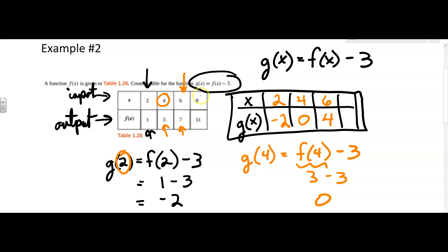And then the last one, our input is 8. We're going to take the output that we get from an input of 8 for the f of 8, 11, and we're going to subtract 3, which is 8.